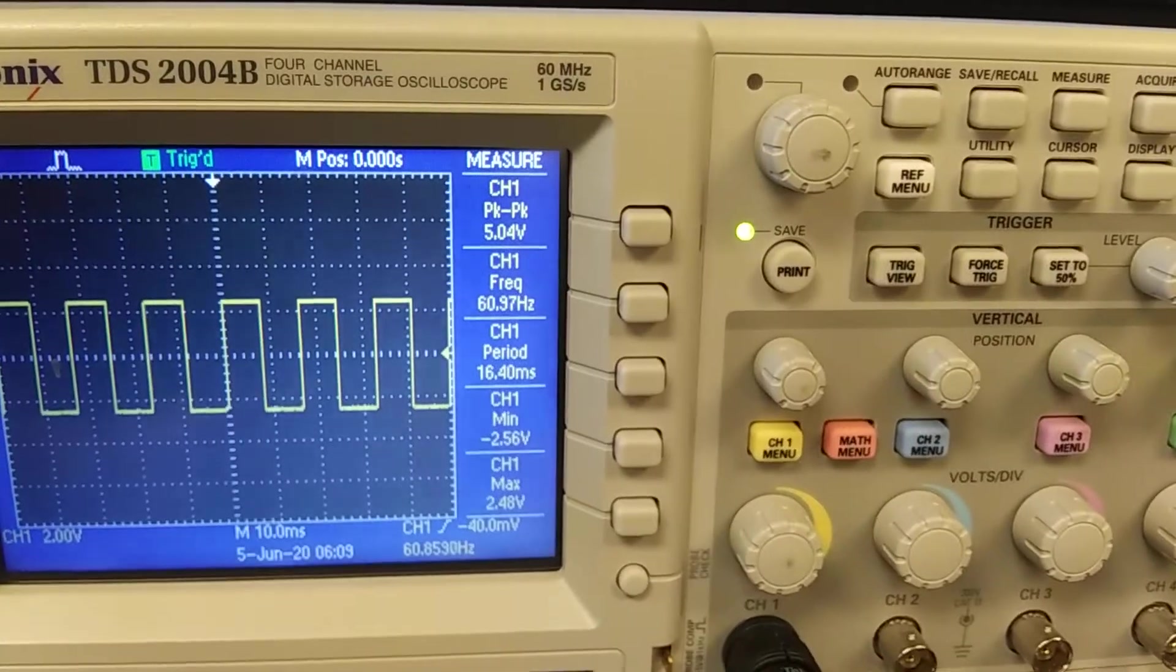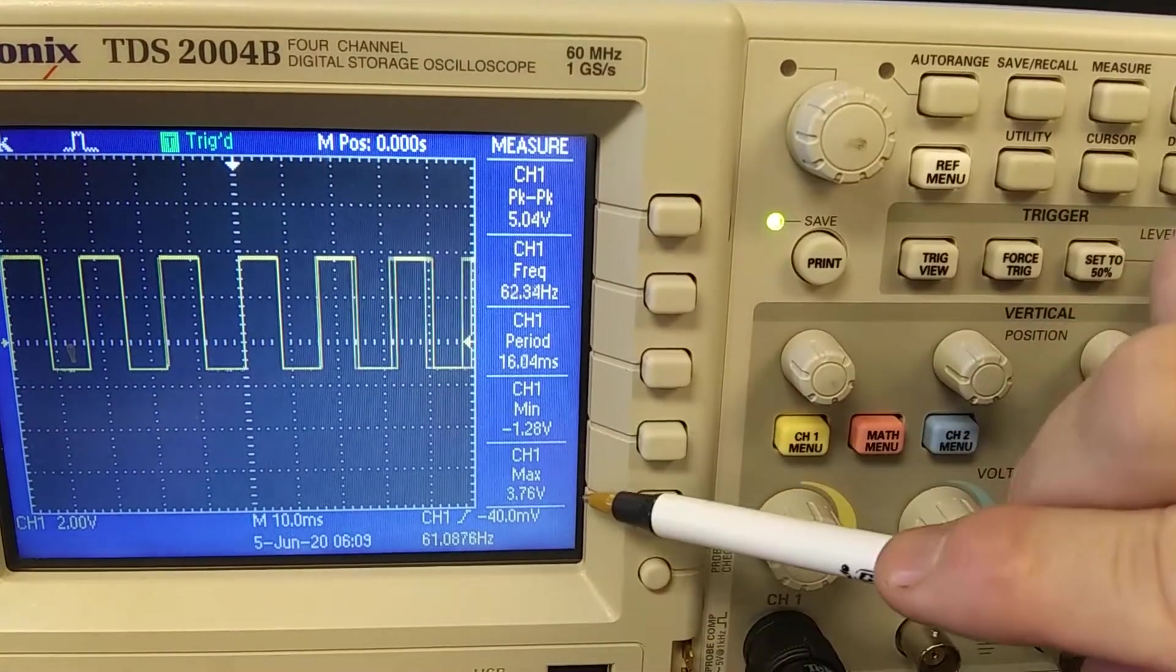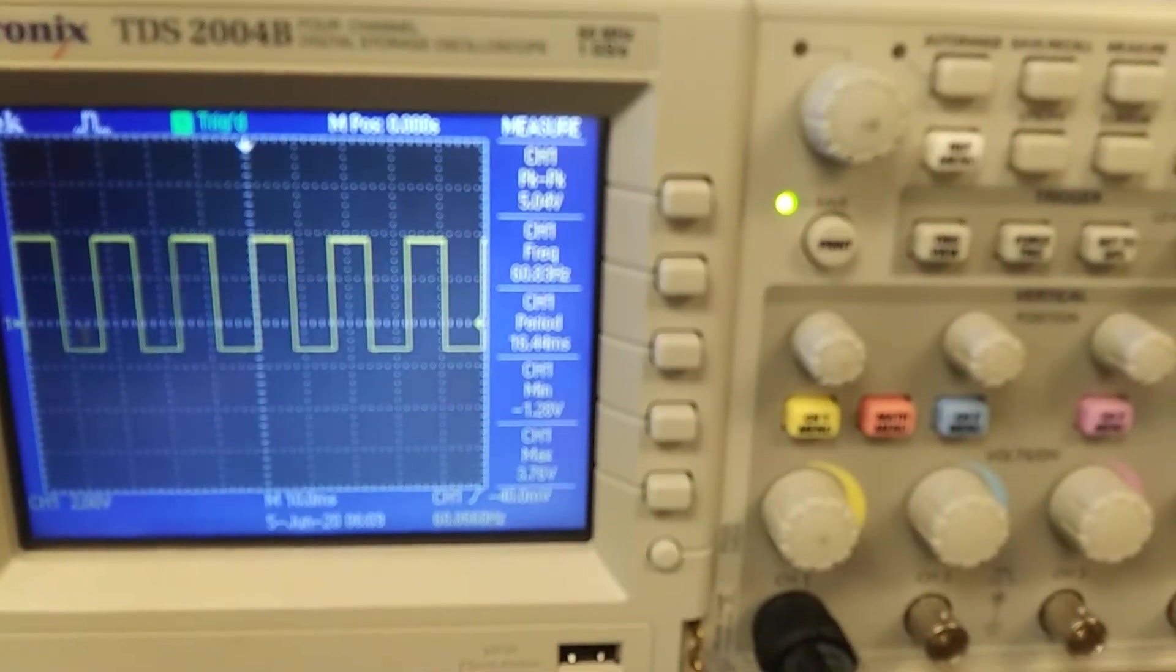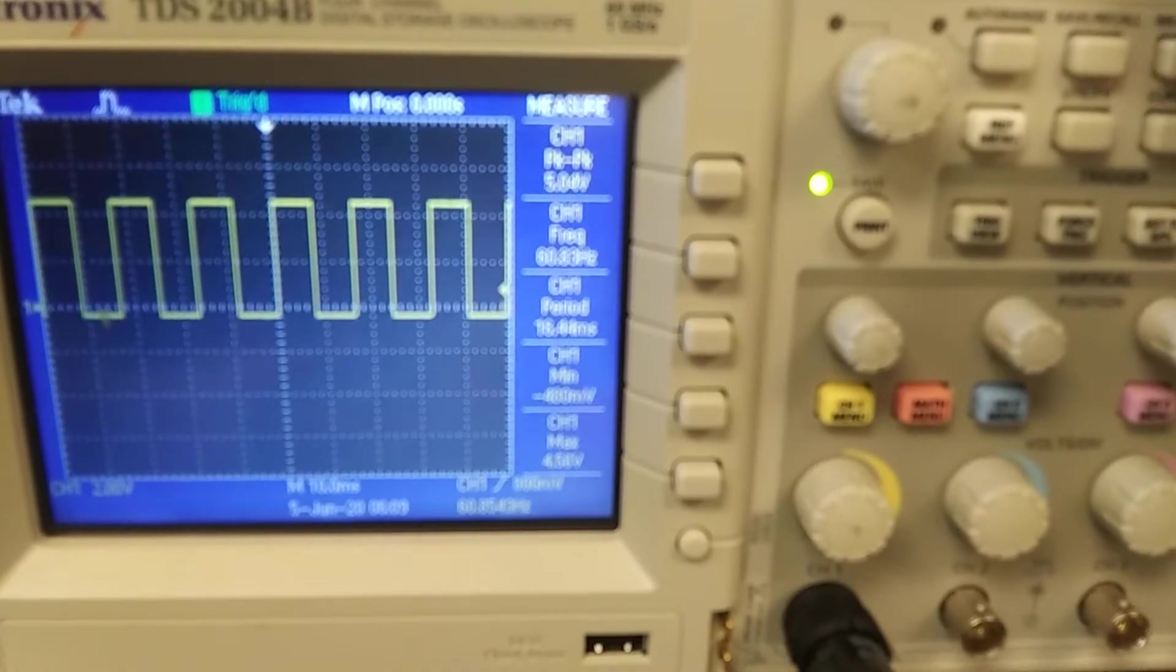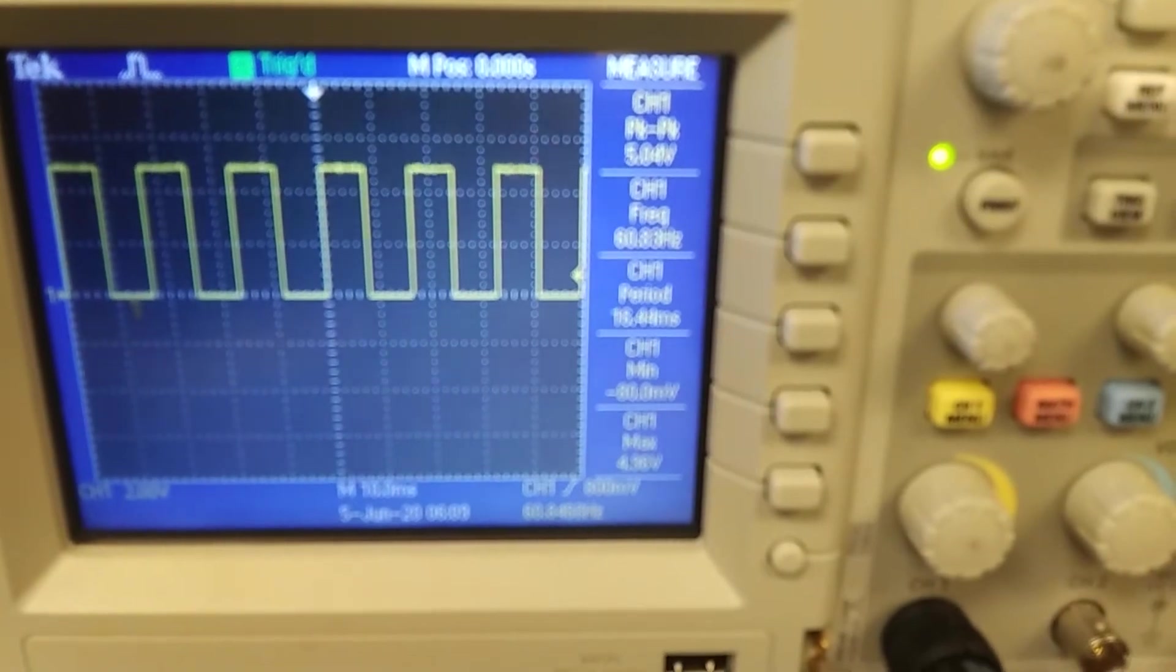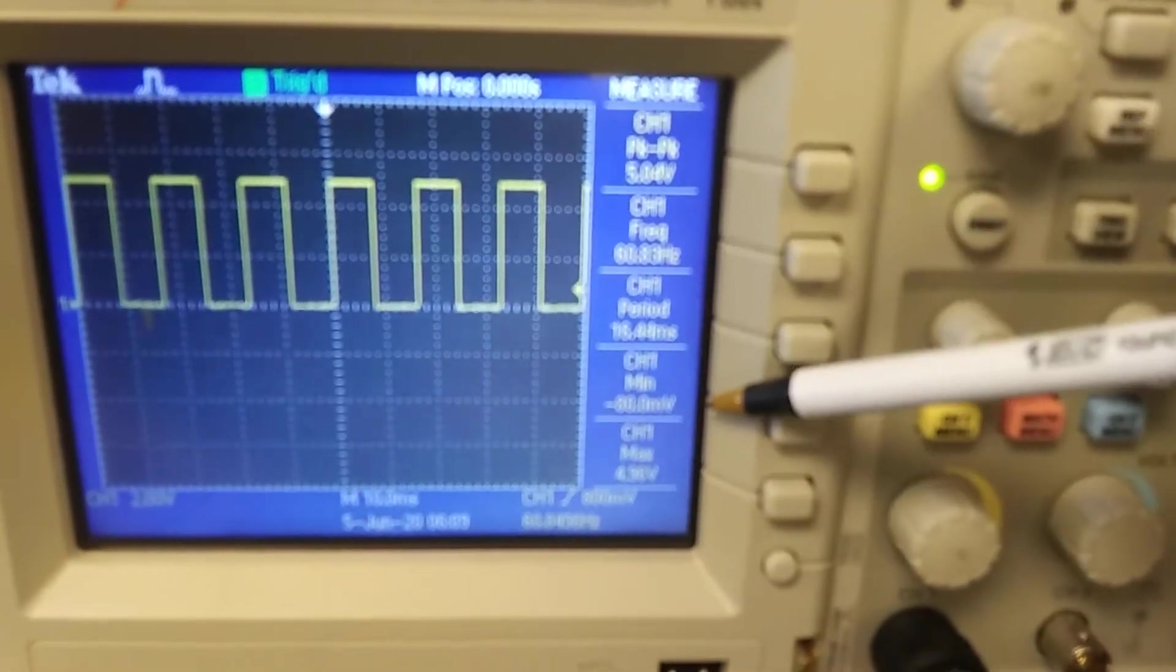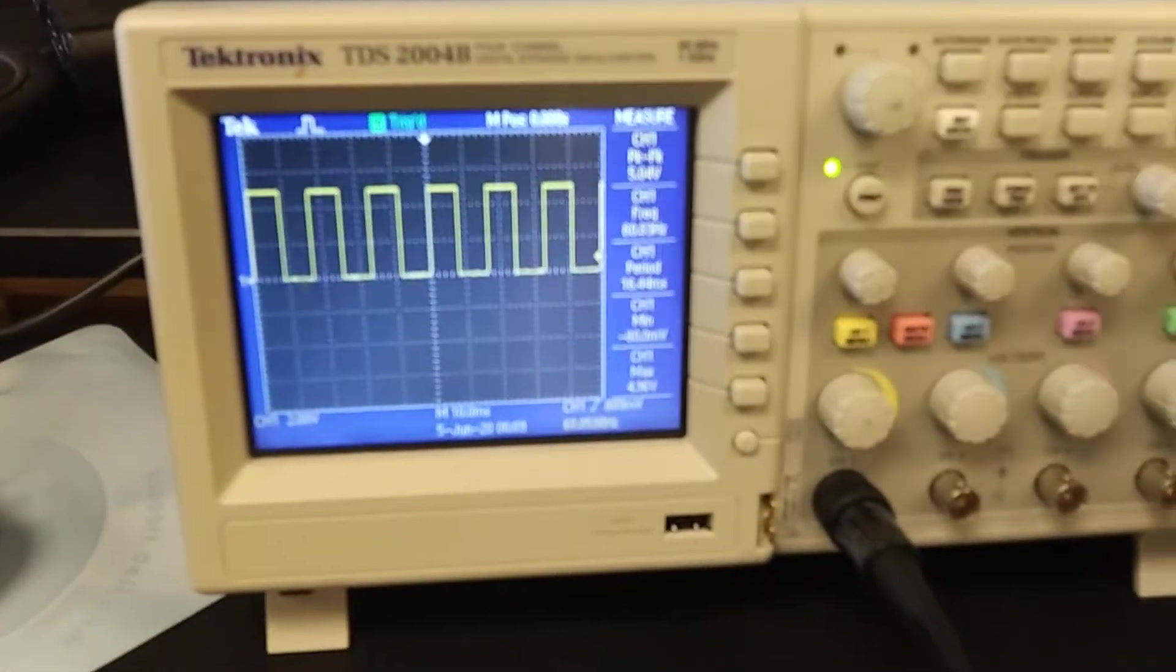I'm adjusting the DC offset. You can see as I adjust it up, look what's happening to the minimum and the max. The peak to peak value is approximately constant but the minimum is going up. And now we're going to run into some trouble with triggering.